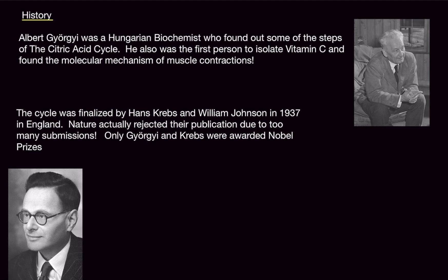Albert Gyorgi, apologize if that pronunciation is wrong, was a Hungarian biochemist who found out some of the steps of the citric acid cycle. Not all of them, but some of them. And he actually found it out using pigeon breast muscle. He was also the first person to isolate vitamin C and found the molecular mechanism of muscle contractions. This guy was an absolute powerhouse, an absolute unit. Imagine how massive this guy's brain was, like 400 IQ.